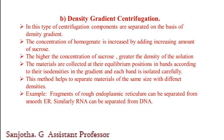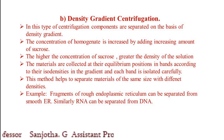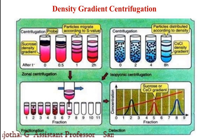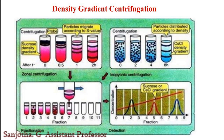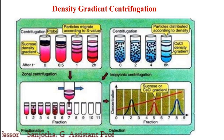This method helps to separate materials of the same size but with different densities. For example, rough endoplasmic reticulum can be separated from smooth endoplasmic reticulum using density gradient centrifugation. Another example is the separation of RNA from DNA. The picture shows how particles with isodensities separate according to different sucrose concentrations, forming distinct bands each containing particles of a particular density.